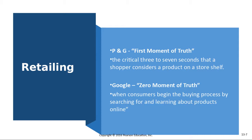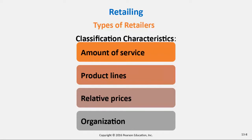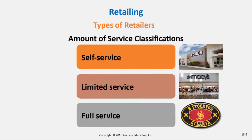We can categorize retailers using different characteristics: how much service a retailer offers, the product lines they carry, relative prices versus competitors, and how they're organized. So we'll look at service, product lines, pricing, and organization — we'll talk about these one at a time. First: service classifications, starting with self-service retailing.